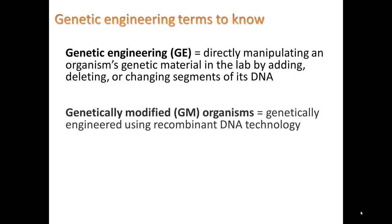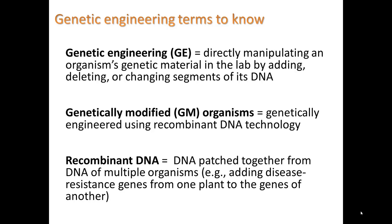When we do that, we get what are called genetically modified organisms, or GMOs — genetically engineered using recombinant DNA technology. Recombinant DNA means DNA patched together from the DNA of multiple organisms. For example, adding disease-resistant genes from one plant to the genes of another.